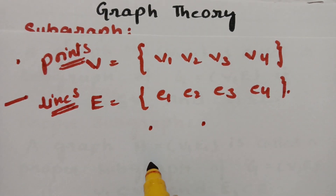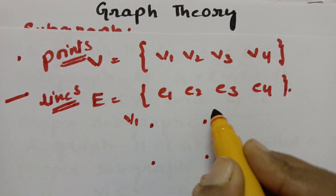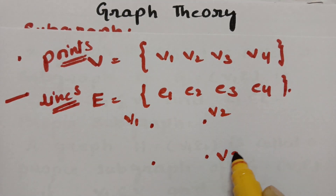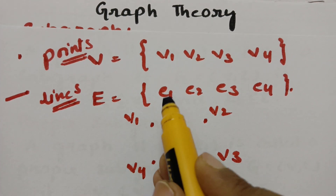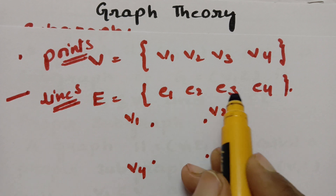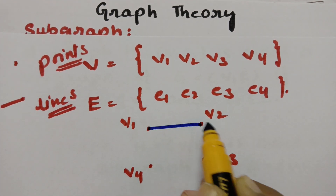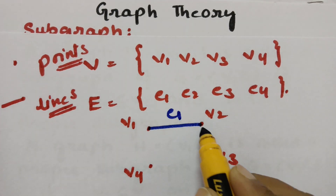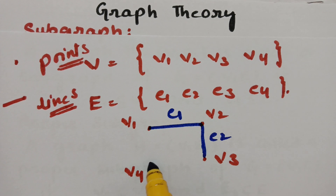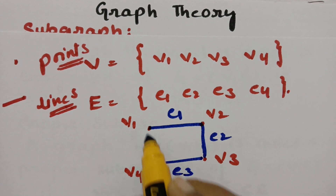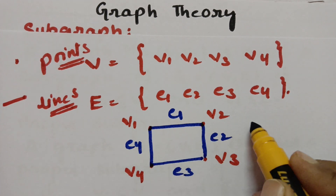So here we have vertices 1, 2, 3, 4 — these are dots, nothing but the vertices — V1, V2, V3, and V4. And if we consider edges E1, E2, E3, and E4: joining two points gives E1, joining two more gives E2, E3, and E4. So this is nothing but the graph.